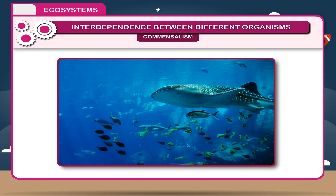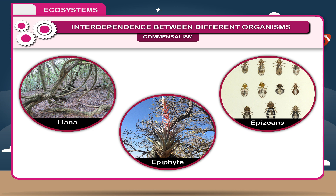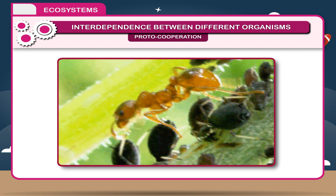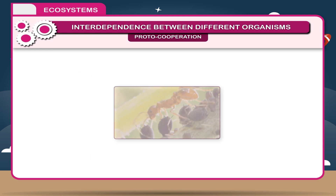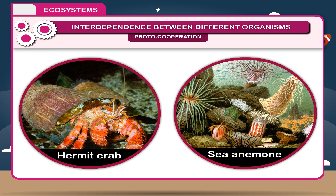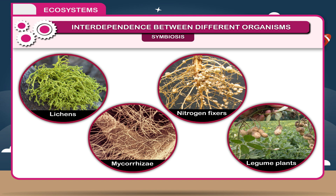Commensalism is an association between two organisms in which one is always benefited but the other is neither benefited nor harmed. Mutualism is an interaction between two species in which both are benefited.